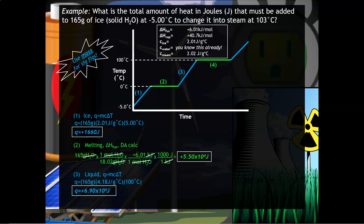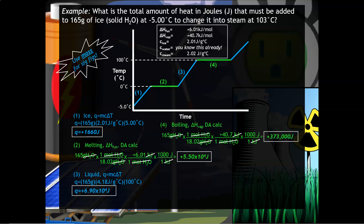Calculation four is another phase change — a flat line — so we can't use Q = mcΔT. We are vaporizing at this point. We start with 165 grams of water, convert to moles, and use ΔH of vaporization = 40.7 kilojoules per mole. Because we want our answer in joules, we apply one more conversion: 1 kilojoule = 1000 joules.